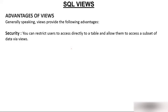You might want to share only certain columns with employees. Suppose you have hired a few employees and you don't want to share all 50 columns with everyone. By using a view, you can keep the security of your table. You can restrict direct access to the table and allow access only to a subset of data through views.